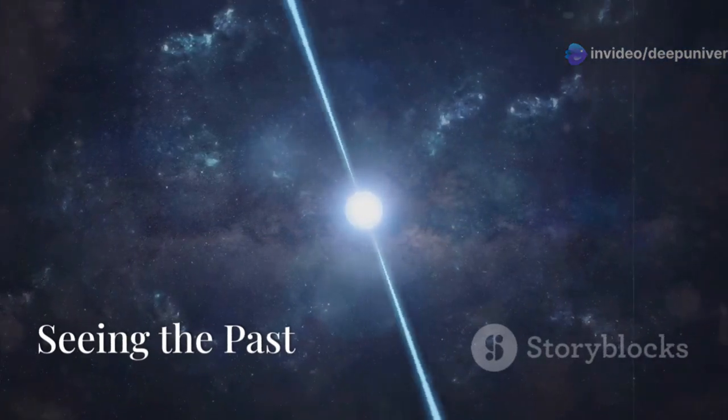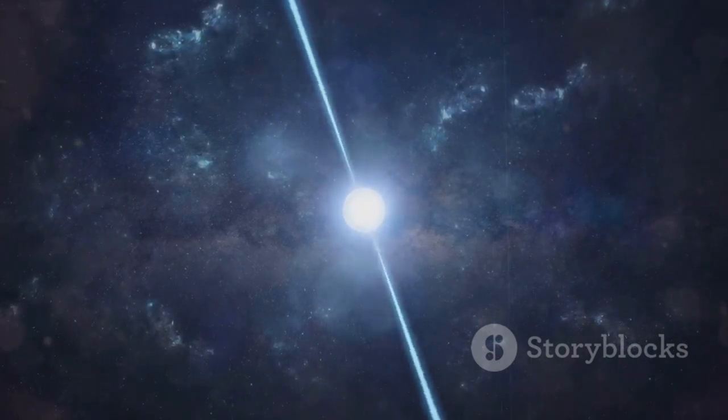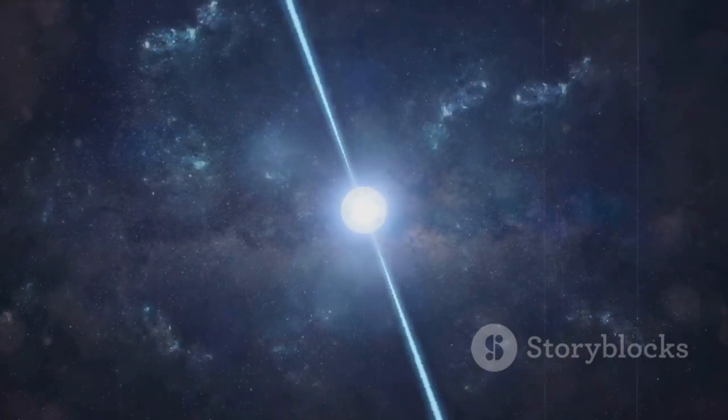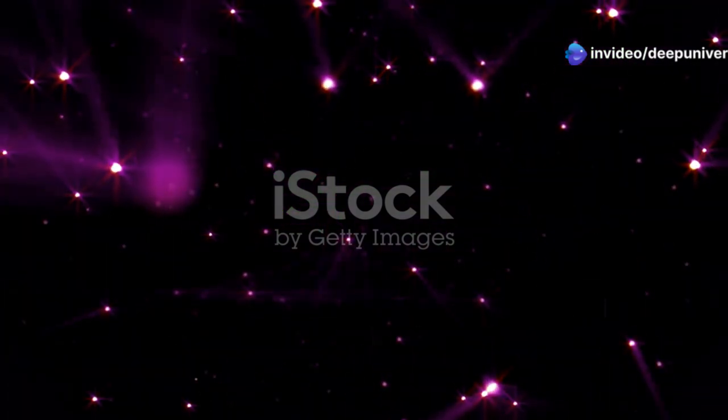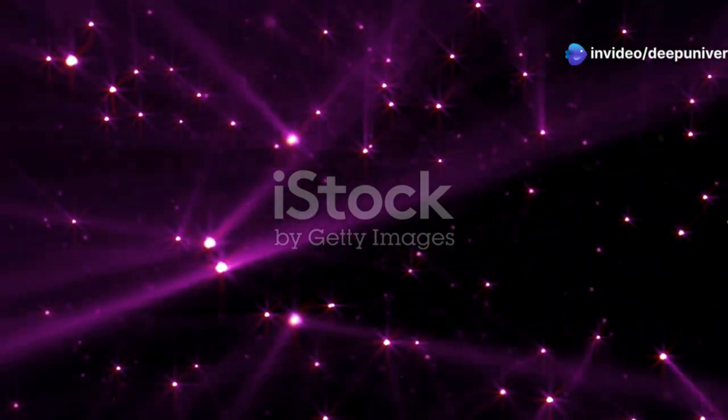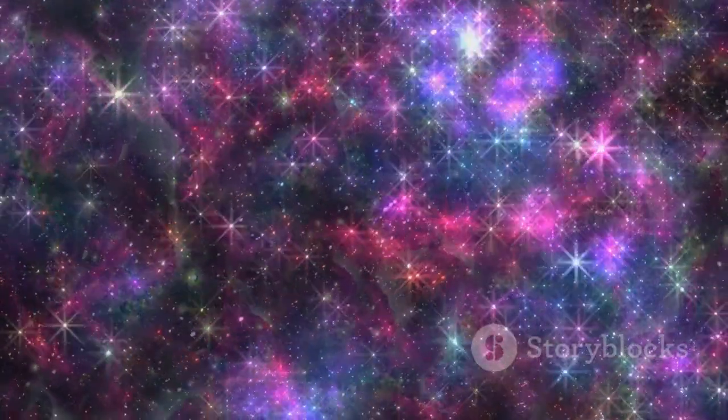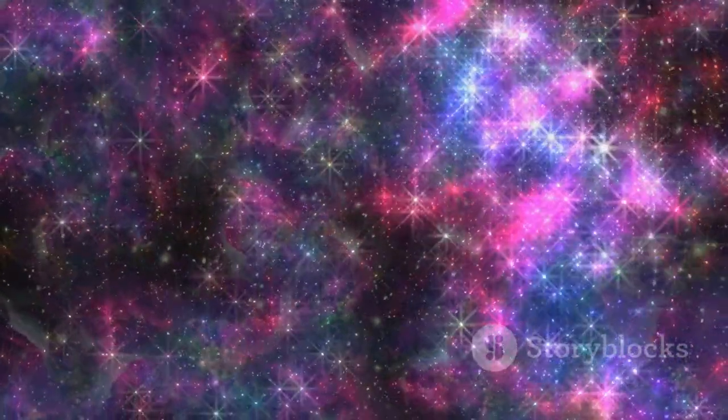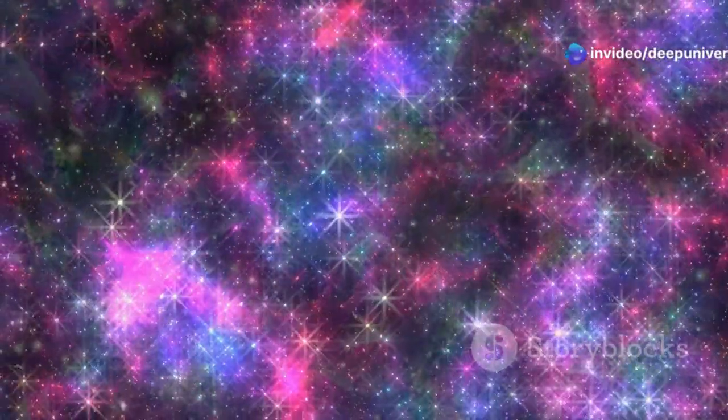Light travels at a finite speed, approximately 299,792,458 meters per second. This speed, often referred to as the speed of light, is the fastest speed at which information or matter can travel in the universe. This means that the farther away an object is in space, the longer it takes for its light to reach us. Essentially, when we observe distant celestial bodies we are looking back in time.